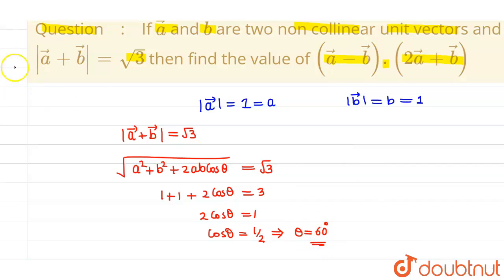As we know, we have to find out the value of A vector minus B vector dot with 2A vector plus B vector. This thing we have to find out.